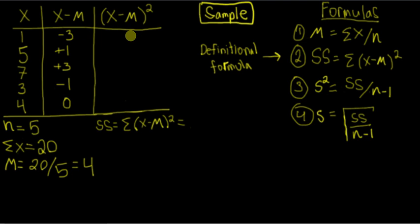Then we move over to the next column. And here now you can see we have x minus m, which is this column, squared. So all we're going to do is square each of these values and put them in their respective rows.